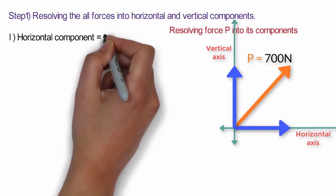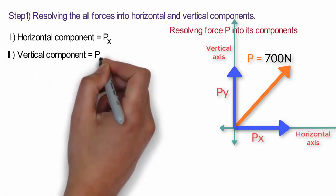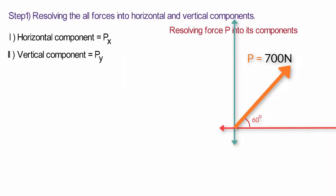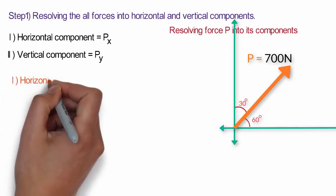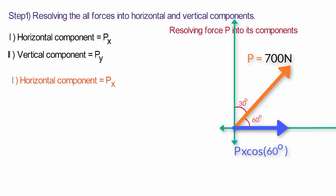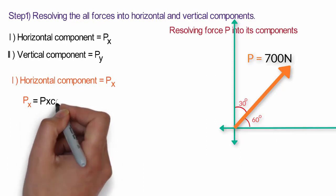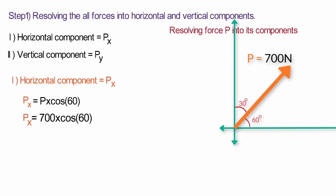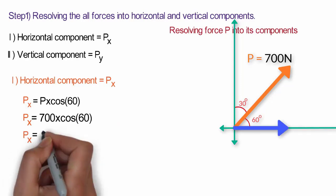I will denote horizontal and vertical components of force P as Px and Py respectively. Force P, which is 700 N, is making an angle of 60 degrees with the horizontal axis, which means the angle made by force P with the vertical axis is equal to 30 degrees. The horizontal component Px will be equal to force P multiplied by cos of the angle made with the horizontal axis — Px = P × cos 60°. After putting the values, Px equals 350 Newton.